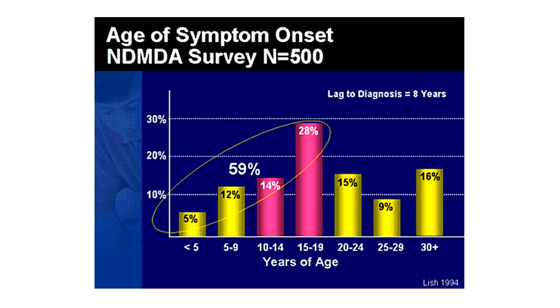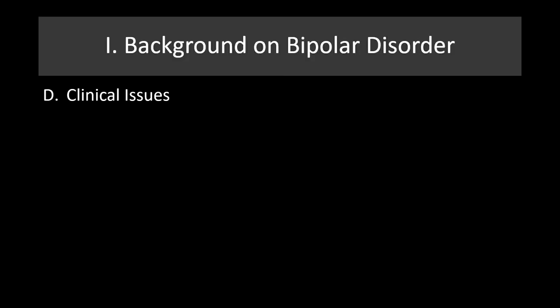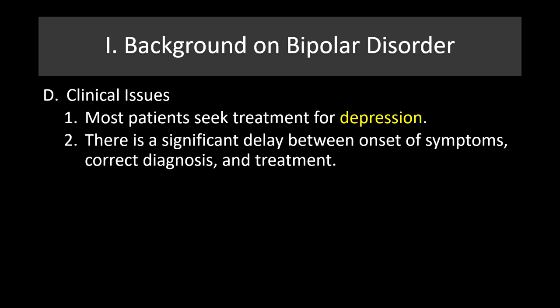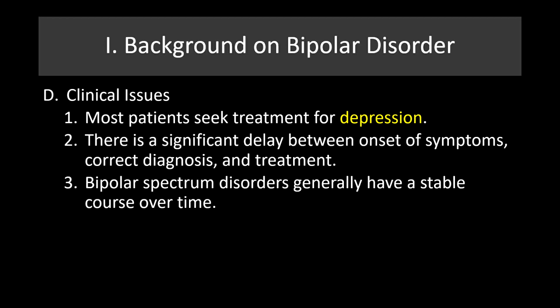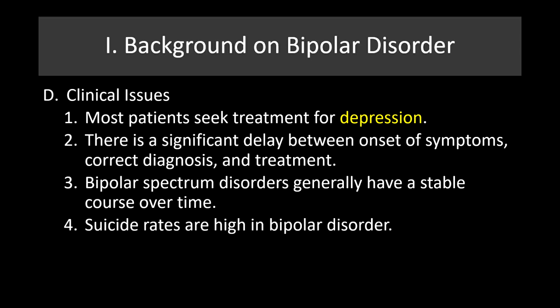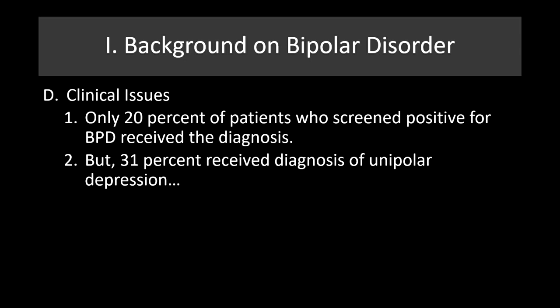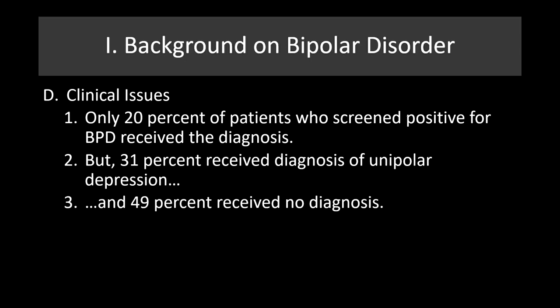Looking at some clinical issues: most patients seek treatment for depression. There's a significant delay between onset of symptoms, correct diagnosis, and treatment. The bipolar spectrum disorders generally have a stable course over time. Suicide rates are very high. Only 20% of patients who screen positive for bipolar disorder receive the diagnosis — this is a grossly underdiagnosed disorder. 31% receive a diagnosis of unipolar depression, and 49% receive no diagnosis at all.